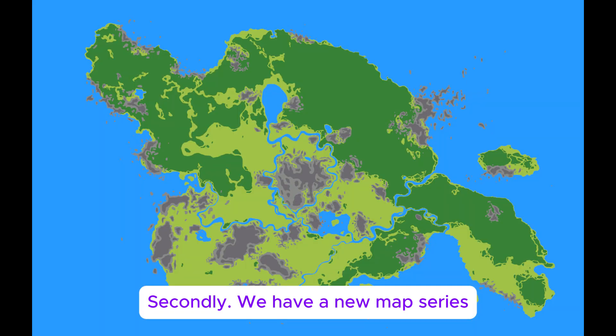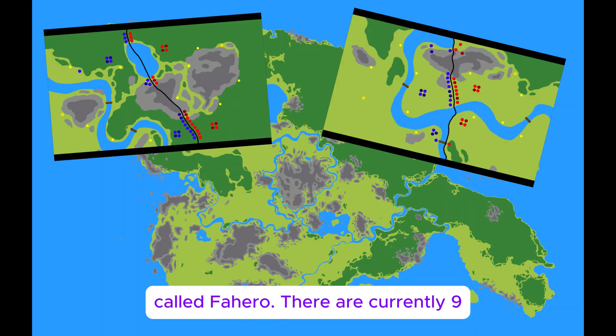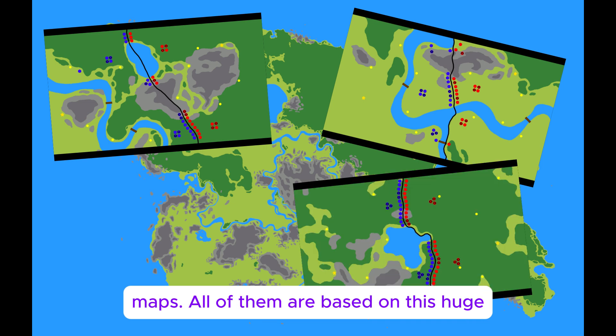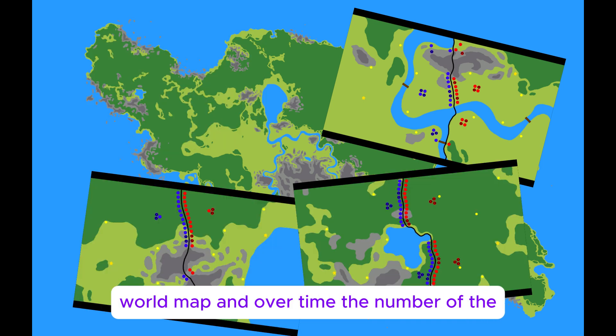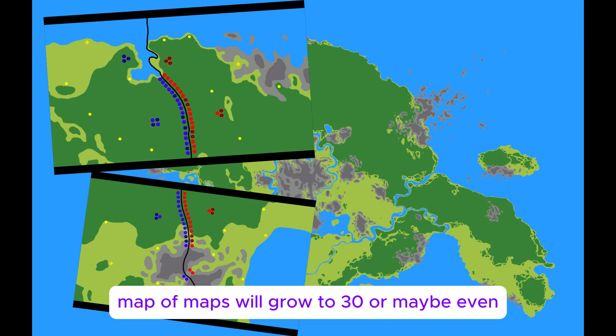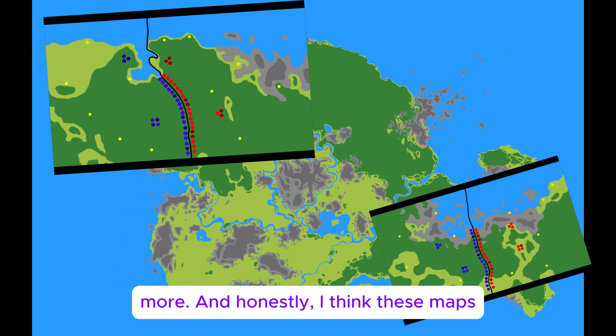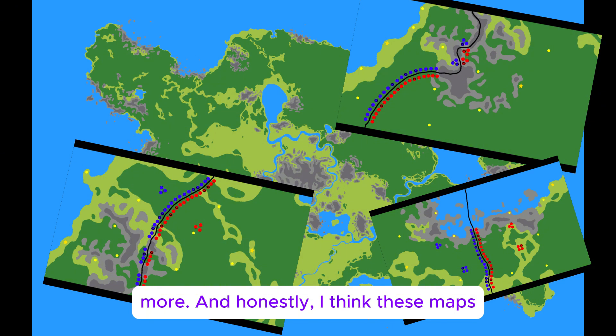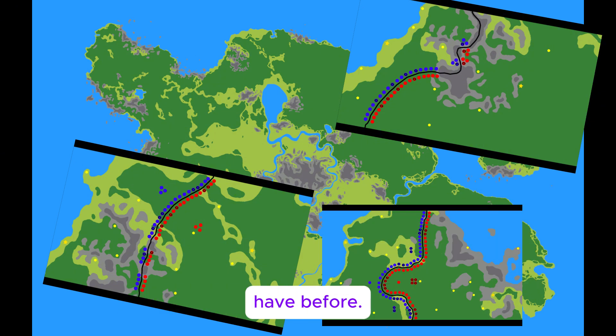Secondly, we have a new map series called Fahir. There are currently nine maps, all of them are based on this huge world map, and over time the number of maps will grow to 30 or maybe even more. And honestly, I think these maps look way better than the ones we used to have before.